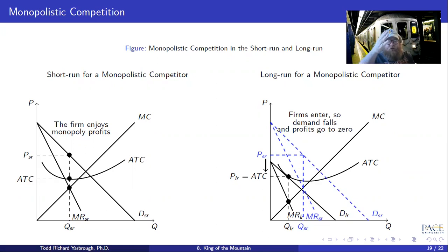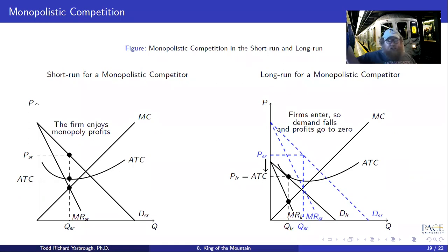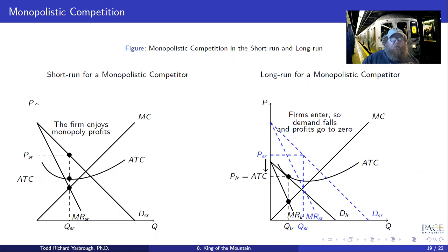Now we're going to talk about two markets which are in between, and that's more realistic. There aren't very many perfectly competitive markets, and there aren't very many unitary monopolist markets. Most markets operate in between them, so the markets we'll discuss here are actually the markets we see in the real world.